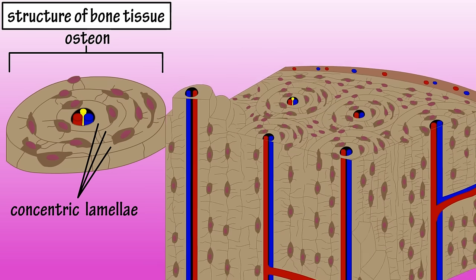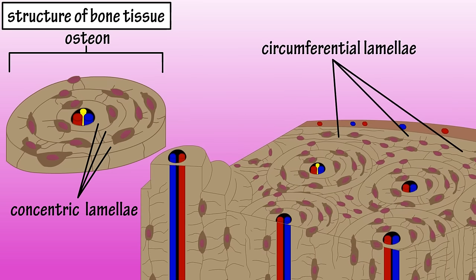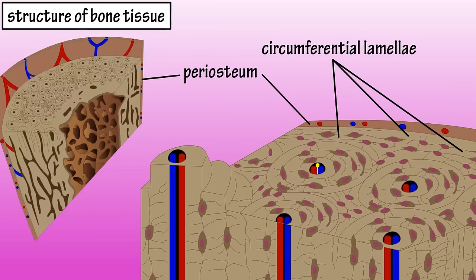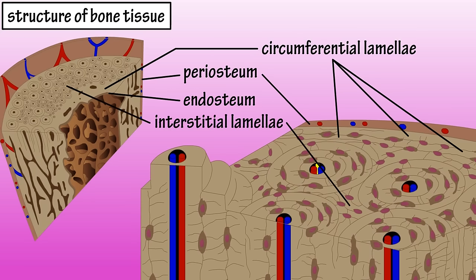There is also a circumferential lamellae that runs along the periosteum, which covers the outside of bones, and along the endosteum, which lines the inner spongy bone tissue. Interstitial lamellae are located between osteons.